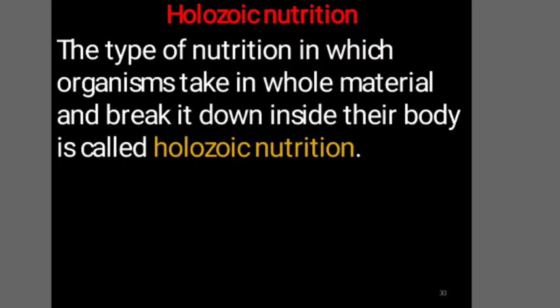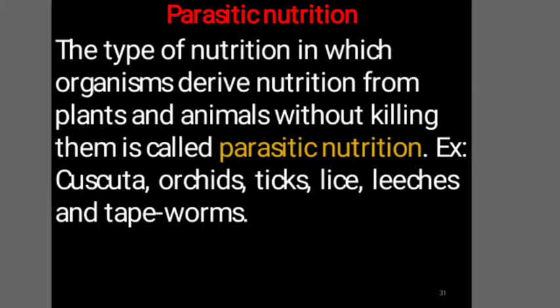In higher animals like human beings, a type of nutrition called holozoic nutrition is seen — a type of nutrition in which organisms take in whole material and break it down inside their body. In another mode called parasitic nutrition, organisms derive nutrition from plants and animals without killing them. Examples include cuscuta, orchids, ticks, lice, leeches, and tapeworms.